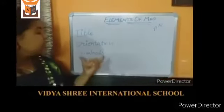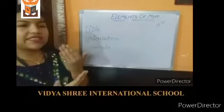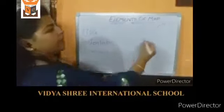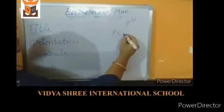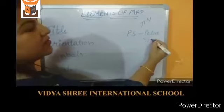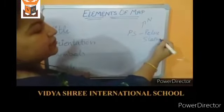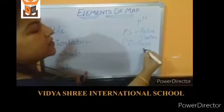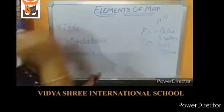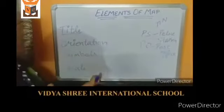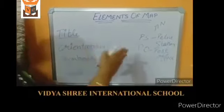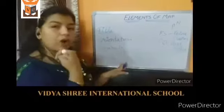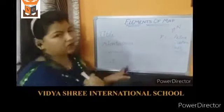Next is symbols. Symbols are the signs and pictures used to represent things from the real world. For example, PS is used for police station, and PO is used for post office. These symbols are defined by keys or a legend, which tells us what all the symbols mean for reading the map.